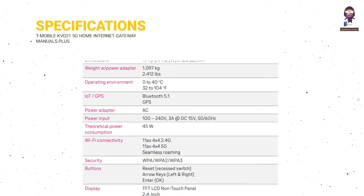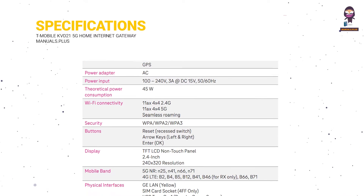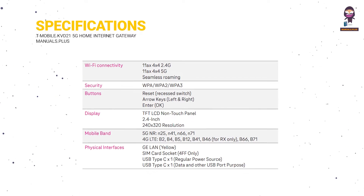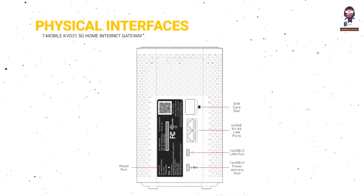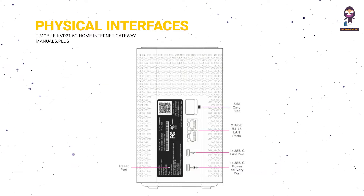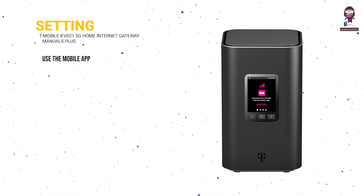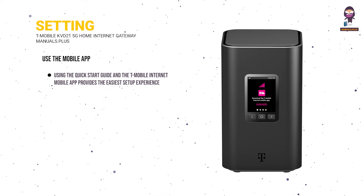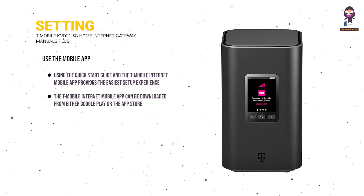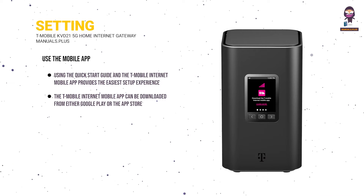Specifications. Setting up using the mobile app: using the Quick Start Guide and the T-Mobile Internet Mobile App provides the easiest setup experience. The T-Mobile Internet Mobile App can be downloaded from either Google Play or the App Store.